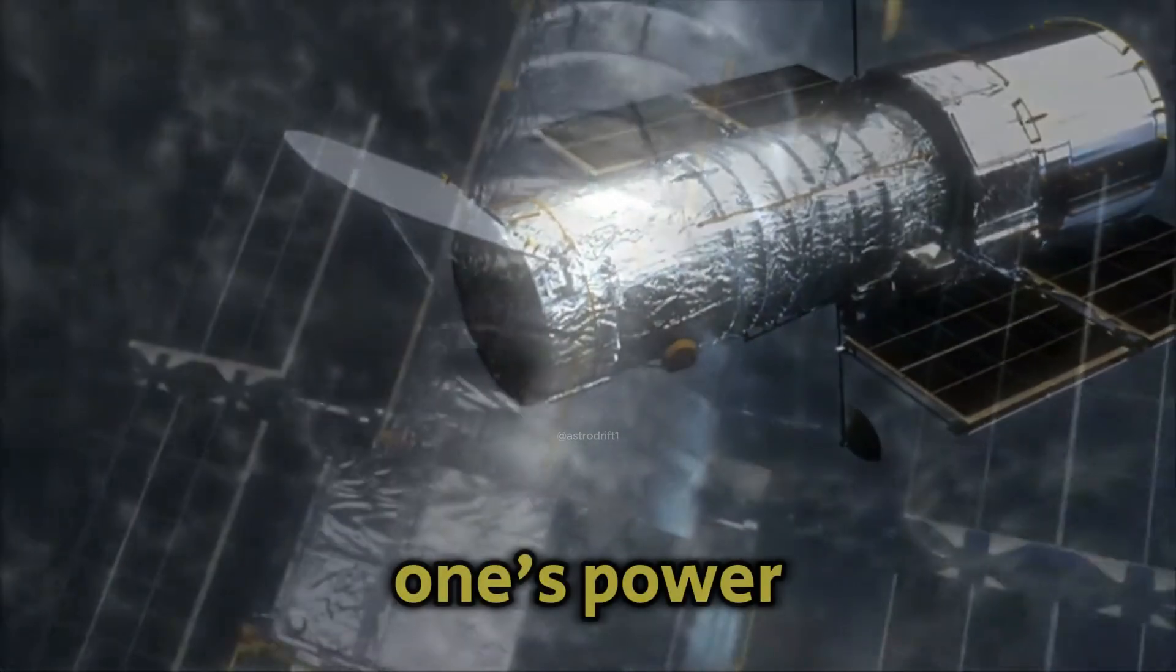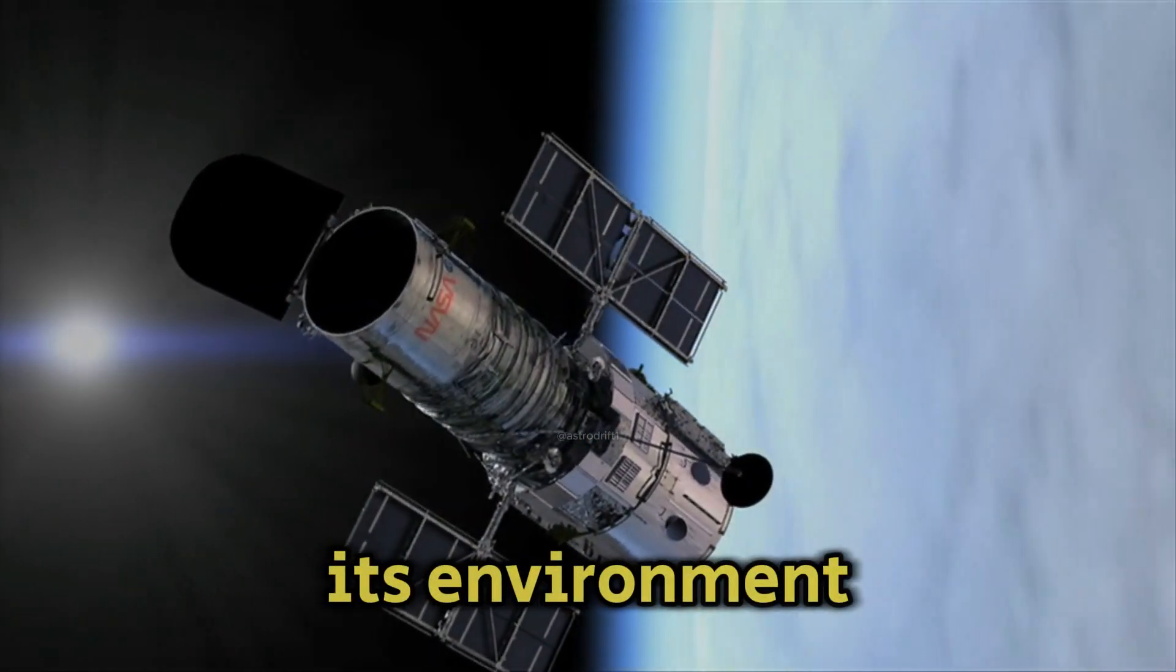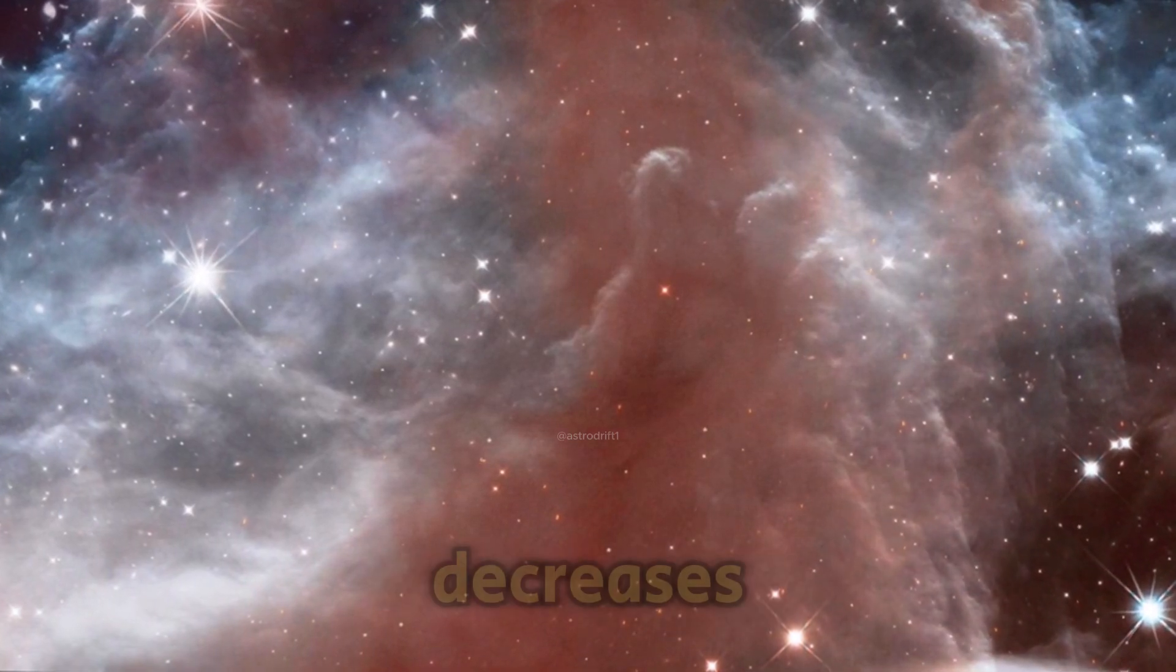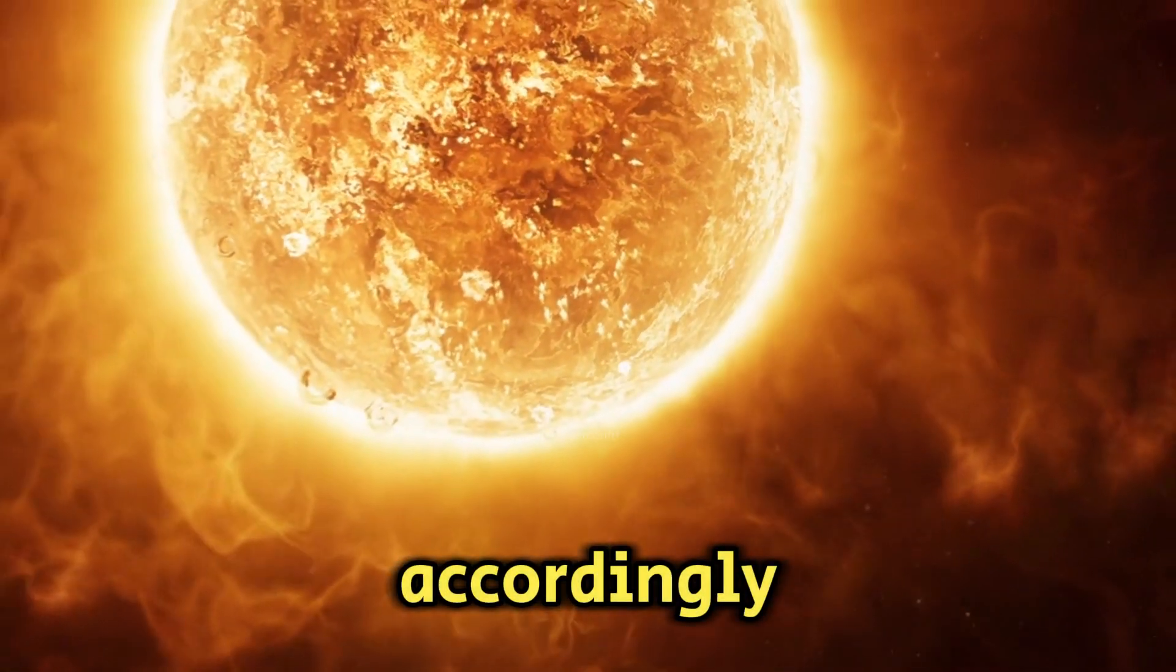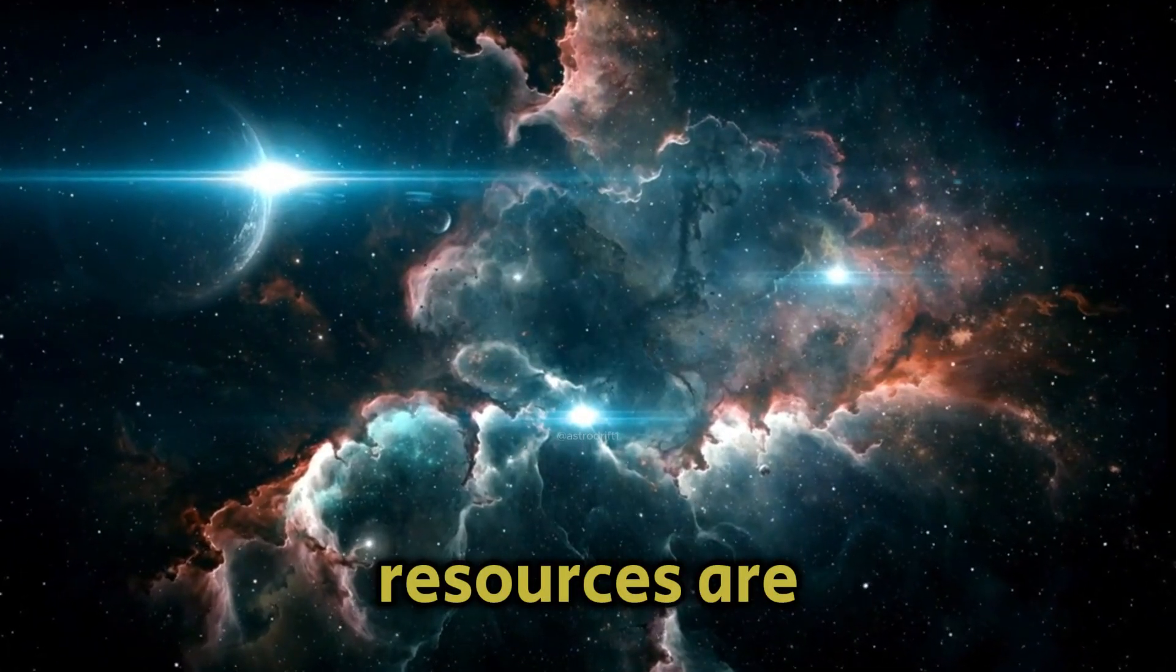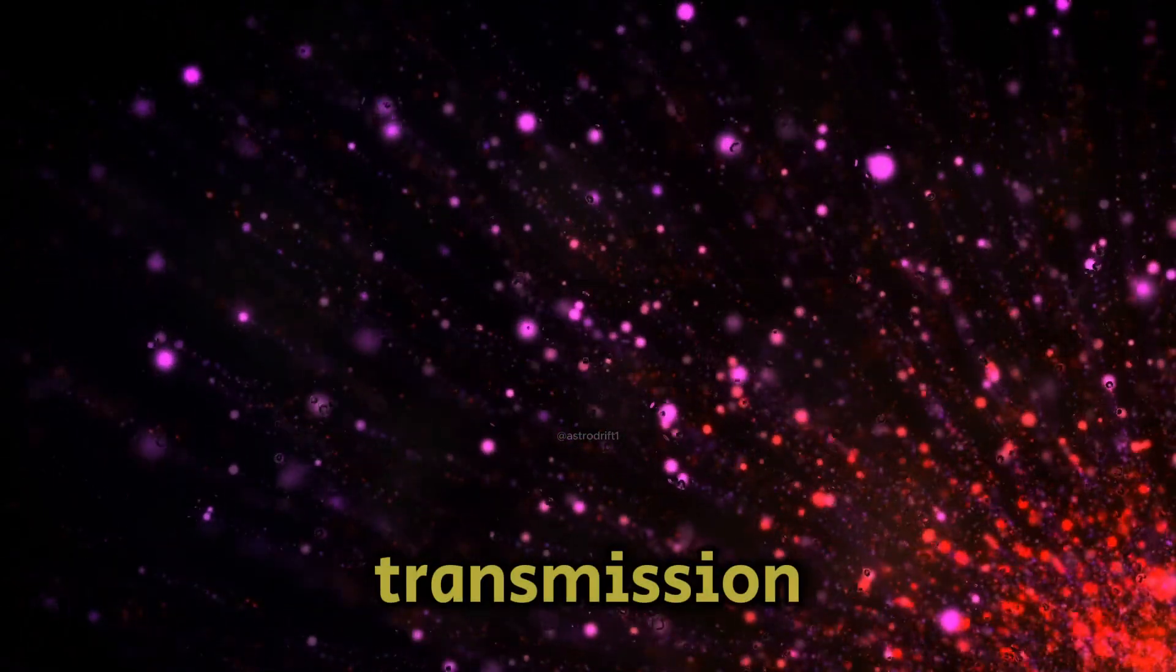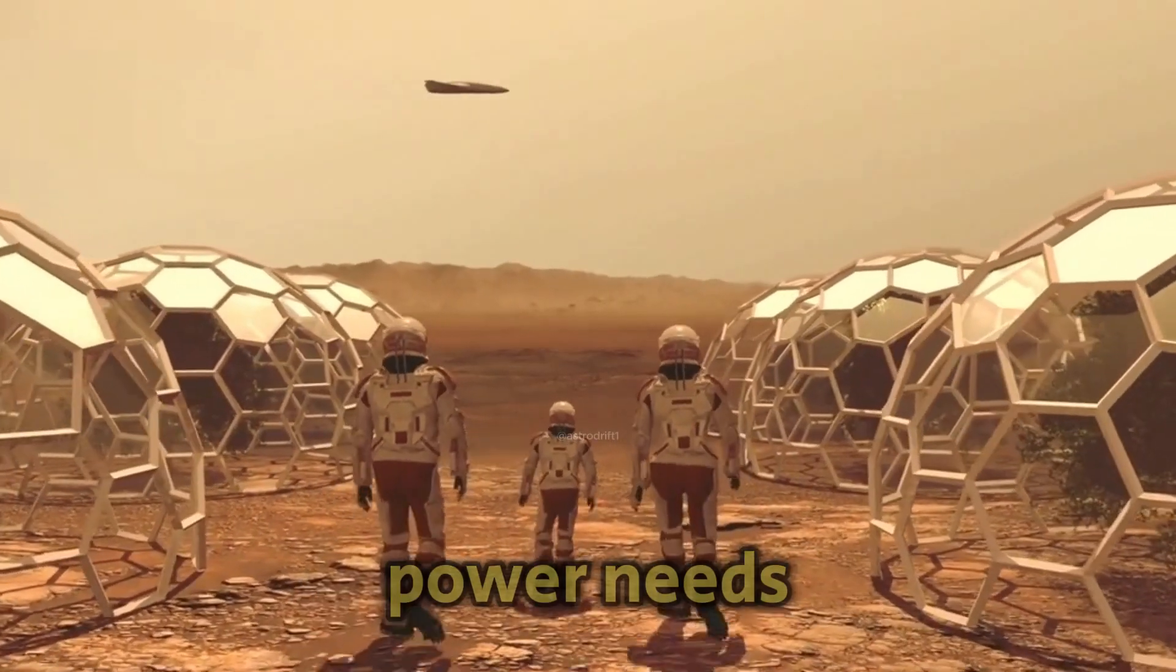Moreover, Voyager 1's power management strategies adapt to the changing conditions of its environment. As the spacecraft moves further from the sun and available solar energy decreases, Voyager 1 adjusts its power management accordingly. Voyager 1 adjusts its power usage to ensure that available resources are efficiently allocated to support critical operations and data transmission. This adaptive approach is crucial for managing the spacecraft's power needs effectively.